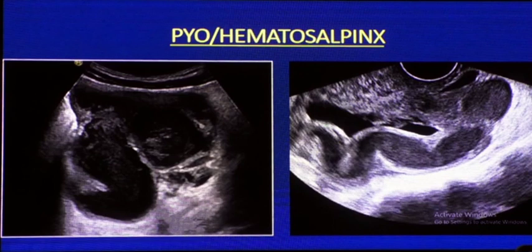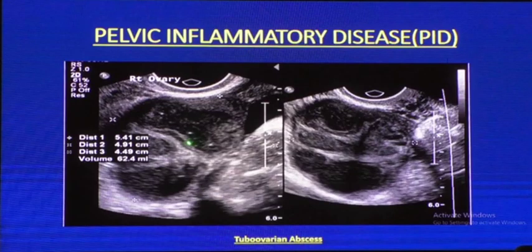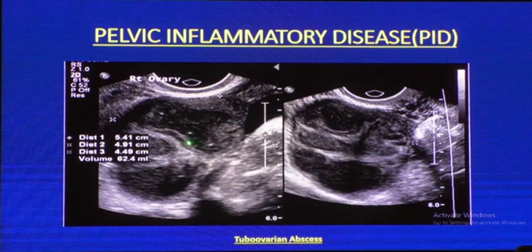Hydrosalpinx appears as a tubular structure with incomplete septa and low-level echoes inside. Tubo-ovarian abscess presents as a large mass with a dirty-looking shadow, multiple septa, lying in the adnexal region — the ovary and other structures cannot be discriminated. The patient presents with fever, rigors, and discharge. On Doppler, florid flow is seen in the thick walls of the abscess.